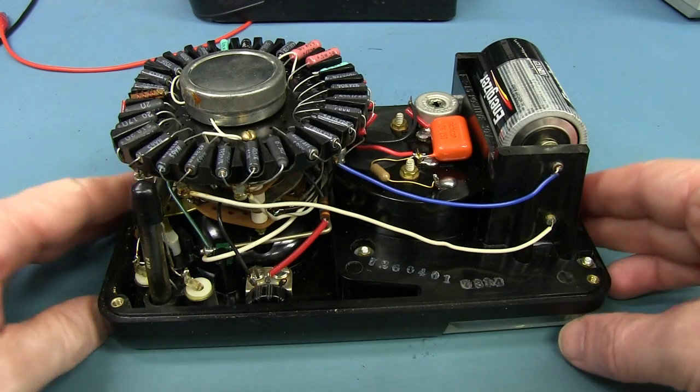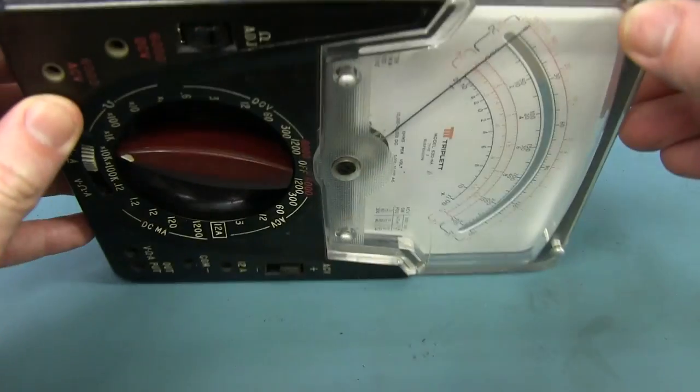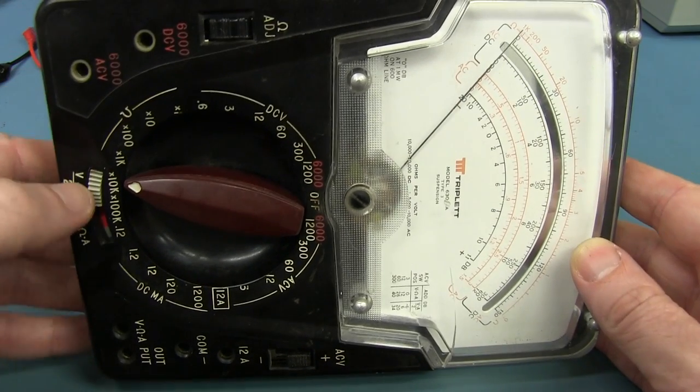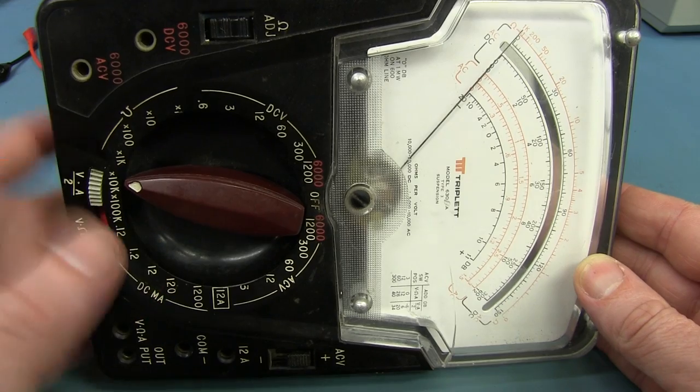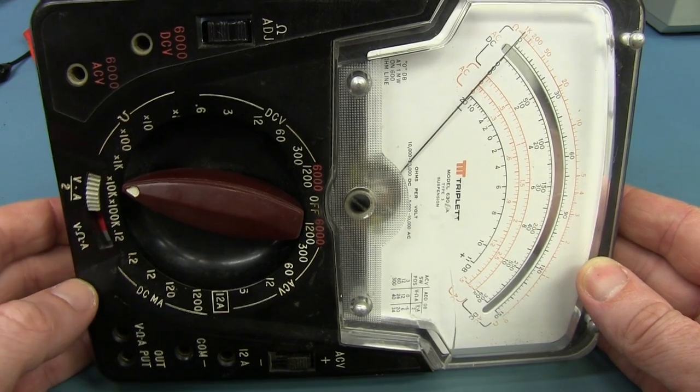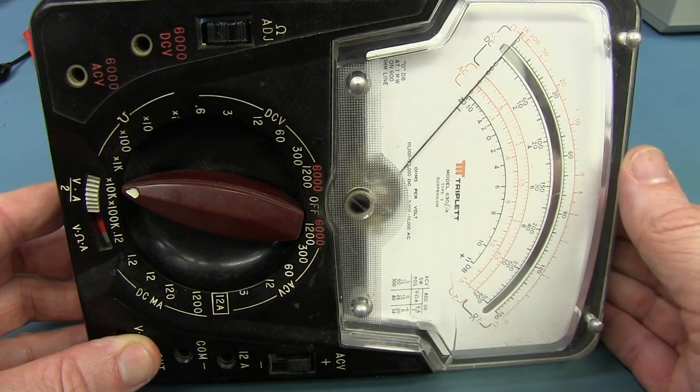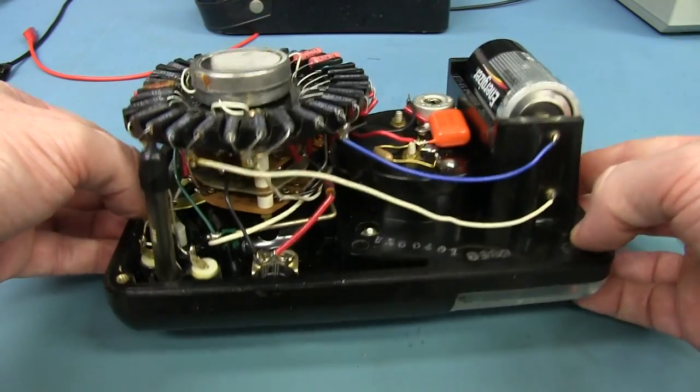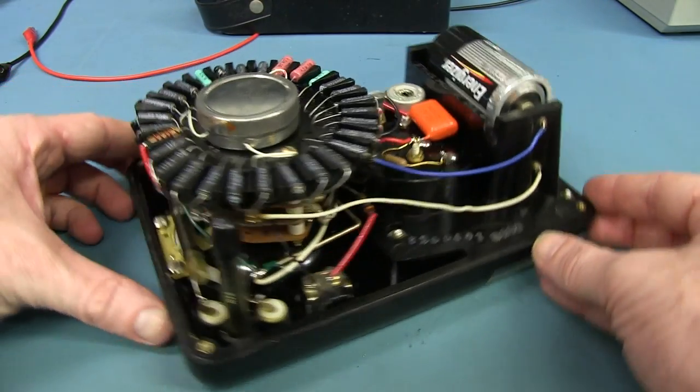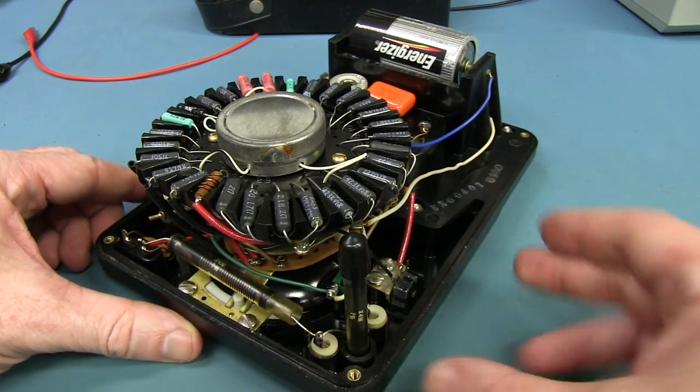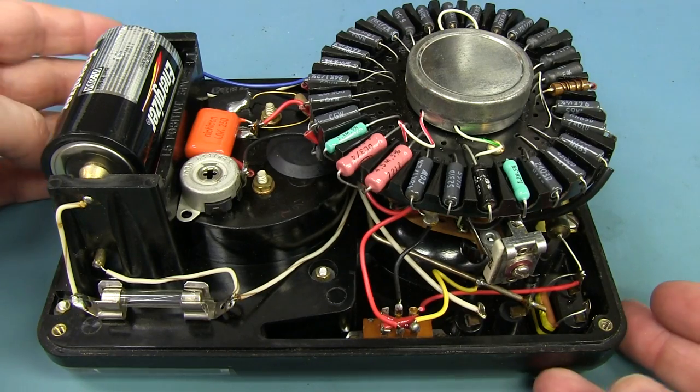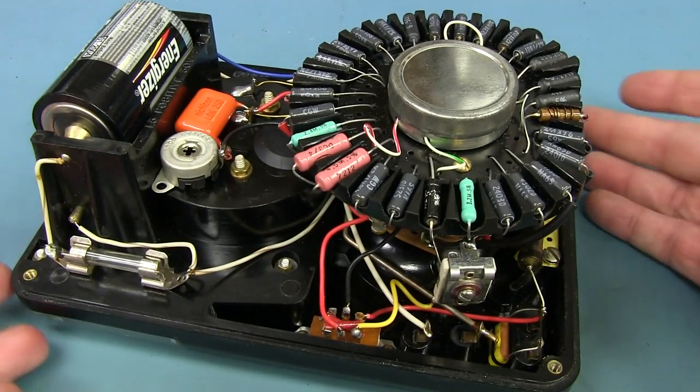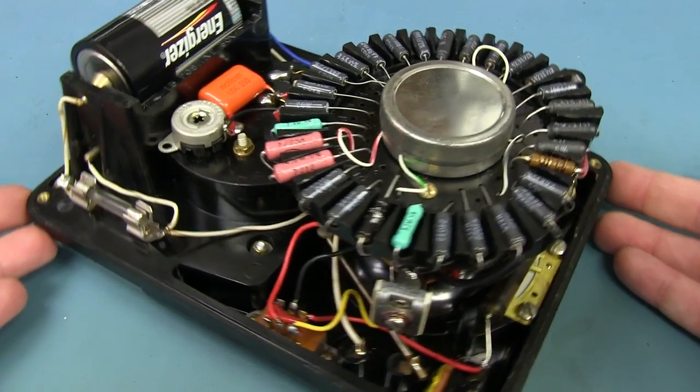Now Triplet do still manufacture these 630, but it's not nearly the same as this classic one. It's only got like, it doesn't have the range doubler. It doesn't have, you know, it's only got 25 ranges. It doesn't have the high voltage, any of the fancy stuff that this puppy has. But hey, they still manufacture the 630. I don't know whether it's still classic point to point construction like that. So there you go. I declare the Triplet 630NA the winner. How could it not be? Look at that. It's a work of art. Bobby Dazzler.